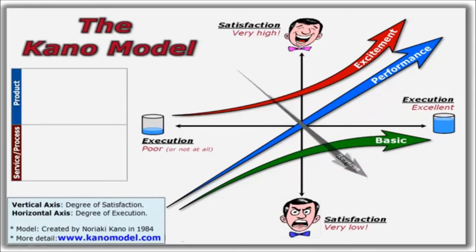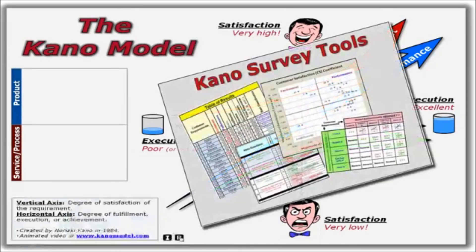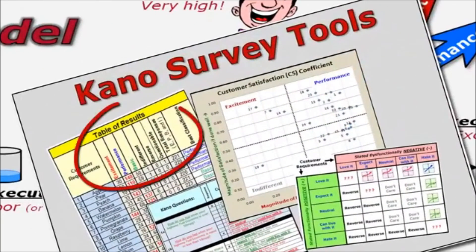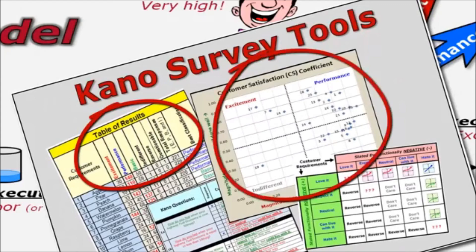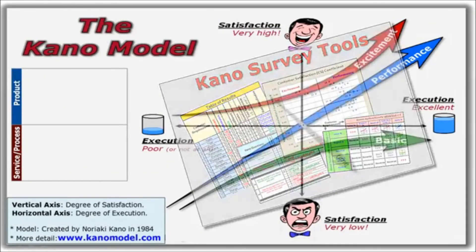Although we won't go into the details in this fundamentals video, there's also a method called the Kano survey that researchers can use to determine and graphically plot which of the five categories all of your product or service requirements fall into. Check out the KanoModel.com website for more details on this method.